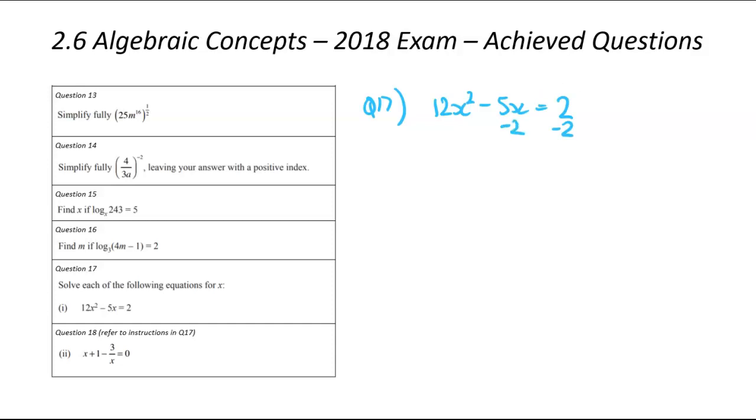Quadratic equations have to be equal to 0. So I'm just going to get rid of that 2. I'm going to go minus 2, minus 2. So that there is 12x squared minus 5x minus 2 equals to 0. At this step here, you could jump in, and use your calculator straight away. a is equal to 12, b is equal to negative 5, c is equal to negative 2. And your calculator will spit out your two answers for x there.